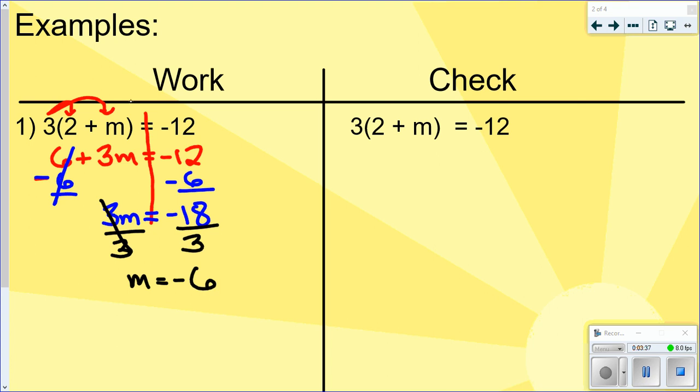And as always, with equations, the nice thing is you can check your answer. So if I plug in negative 6 for m, let's see if this is equal to negative 12. So I have 3 times 2 plus negative 6. So do the parentheses first. Follow PEMDAS. 2 plus negative 6 is negative 4. So now I have 3 times negative 4, which is negative 12, which is what I wanted. So I know this is the correct answer, m equals negative 6.